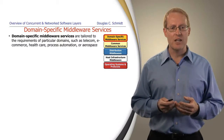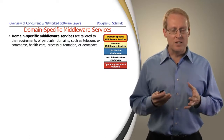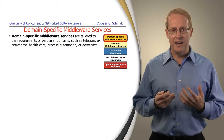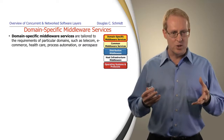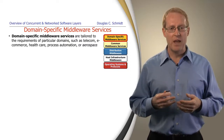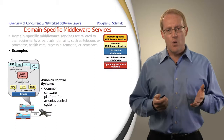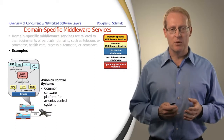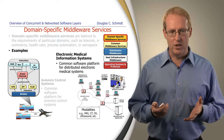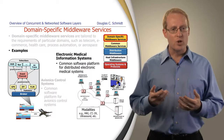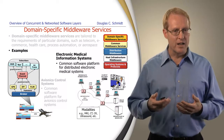The last layer we'll talk about here is the layer of domain-specific middleware services. These are the kind of services you're not likely to get off the shelf because they tend to represent the intellectual property and perhaps even the trade secrets of companies that develop applications in a particular domain — perhaps automation, aerospace, avionics, healthcare, or e-commerce. We're going to talk about a couple of examples in this course, including avionics control systems and electronic medical information and imaging systems.